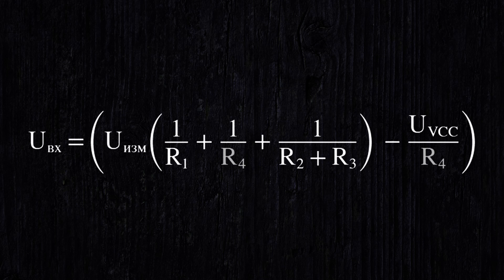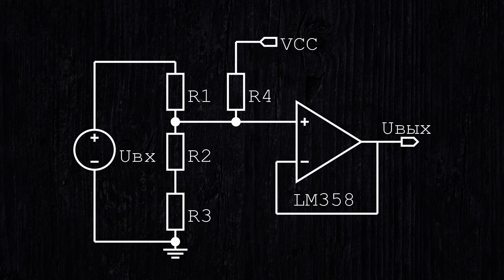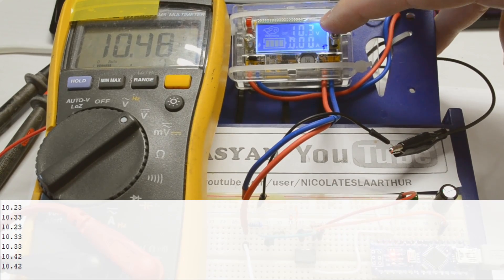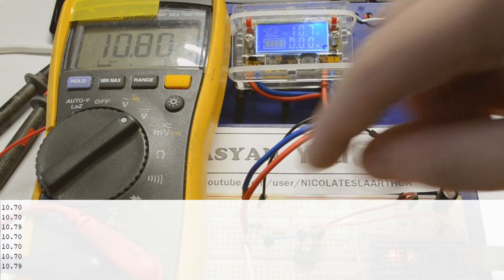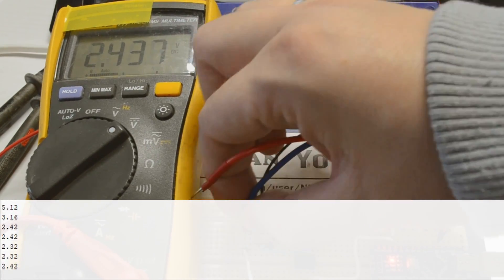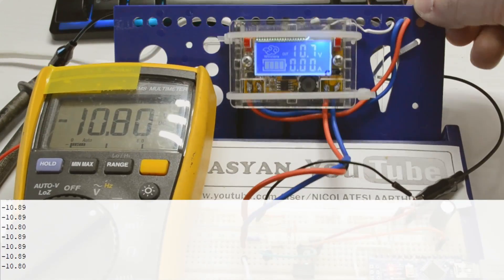The value of R4 should be approximately equal to the resistance between the output from the divider and ground. So, for a range of 50V, we set 10 kOhm, and for a range of 500V, 1 kOhm. Now the nominal zero signal is set at 2.5V, and we can measure negative voltages. Let's check. Everything works.